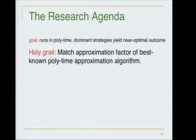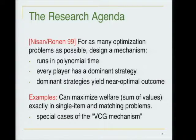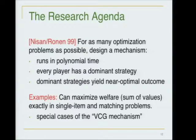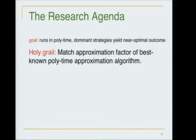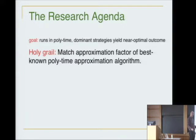What's the best-case scenario — the most sweeping positive theorem we could have? There are two types of constraints: computational (polynomial time) and game-theoretic (players have foolproof dominant strategies). If you delete the game-theoretic constraints, you're in pure approximation algorithms. If you delete the polynomial-time constraint, there are VCG mechanisms — Vickrey-Clarke-Groves — that solve the problem completely. The best case would be that game-theoretic constraints can be accommodated for free with no additional loss in approximation quality.